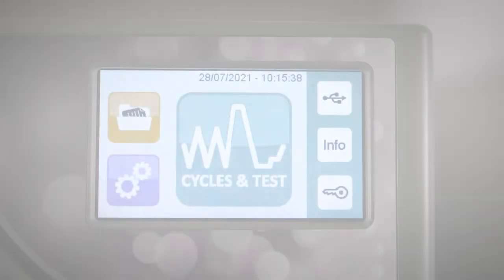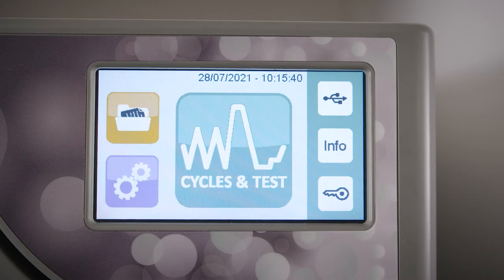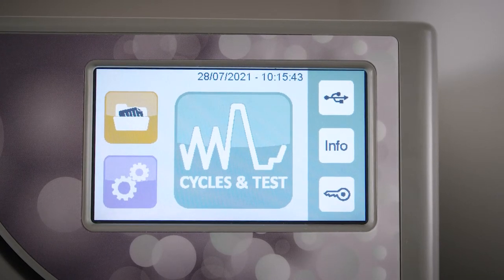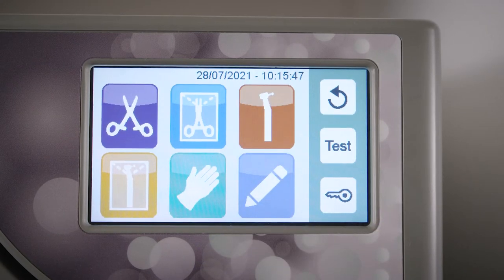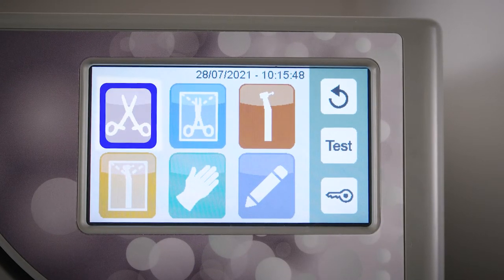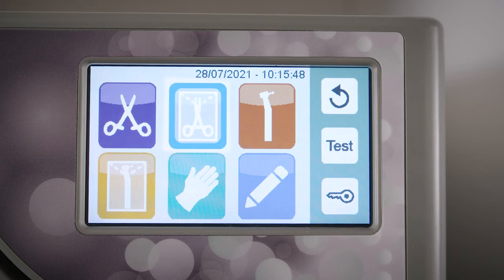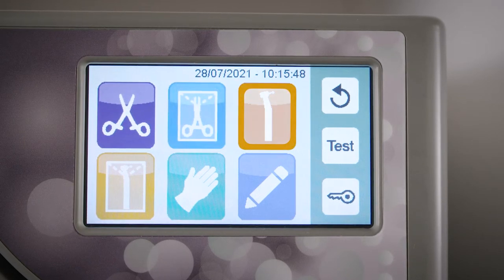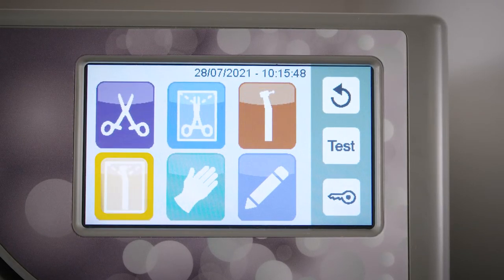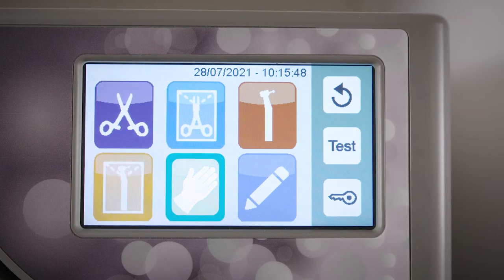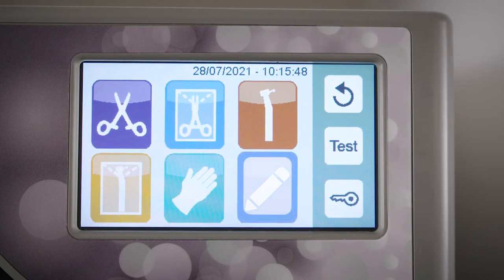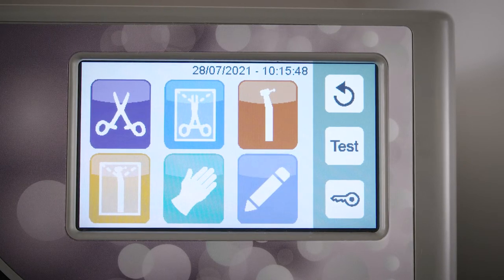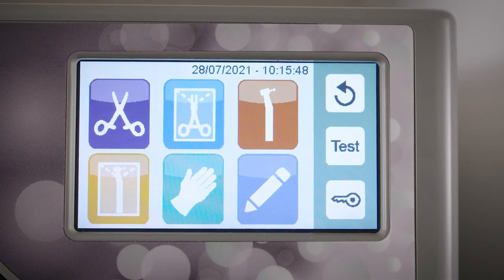The cycles and test icons give you access to the Bravo G4's sterilization and test cycles. The Bravo G4 offers five validated cycles including solid unwrapped, solid wrapped, hollow unwrapped, hollow wrapped, and rubber and plastic cycle. In addition, a user-defined custom cycle is available. Please consult the operator's manual for more information about the custom cycle.